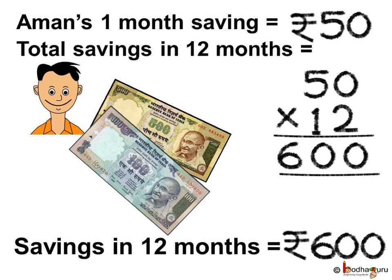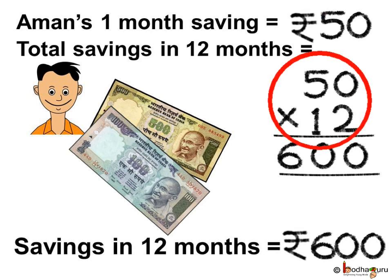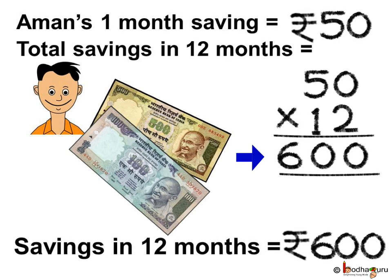Let us see again how we solve this problem. Aman's 1 month saving is equal to 50 rupees. Total savings in 12 months is equal to 50 multiplied by 12, which is equal to 600. Thus the total amount he saved in 12 months is 600 rupees.